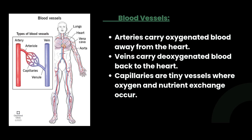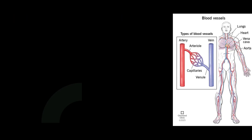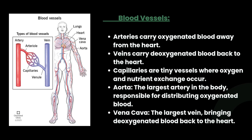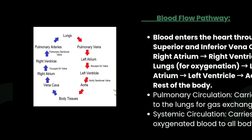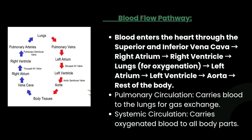The next component is blood vessels. Arteries carry oxygenated blood away from the heart; veins carry deoxygenated blood back to the heart; capillaries are tiny vessels where exchange of oxygen, nutrients, and waste occurs. The aorta is the largest artery in the body, responsible for distributing oxygenated blood. The vena cava is the largest vein, which brings deoxygenated blood back to the heart.